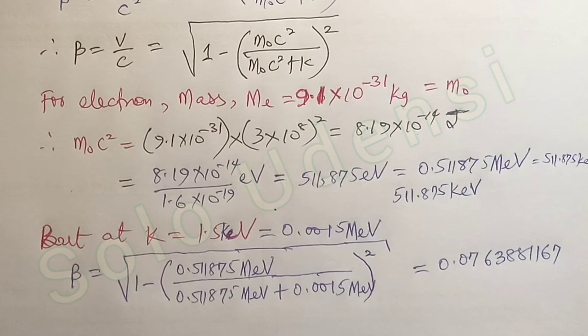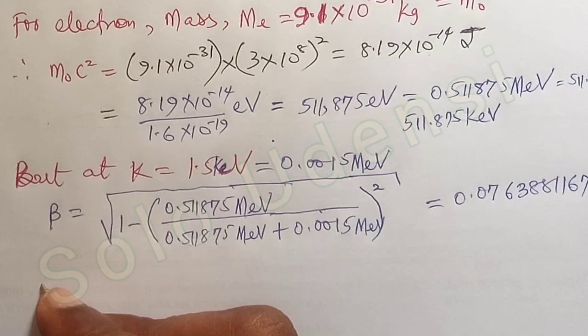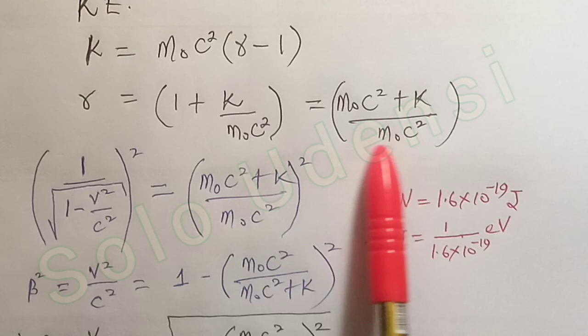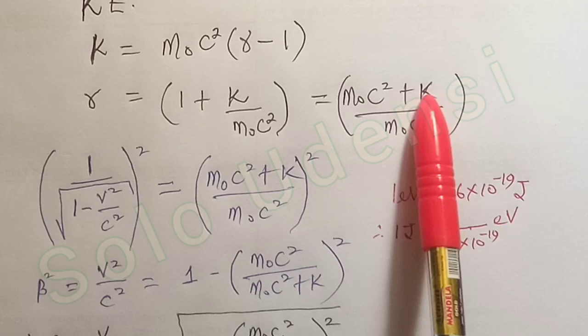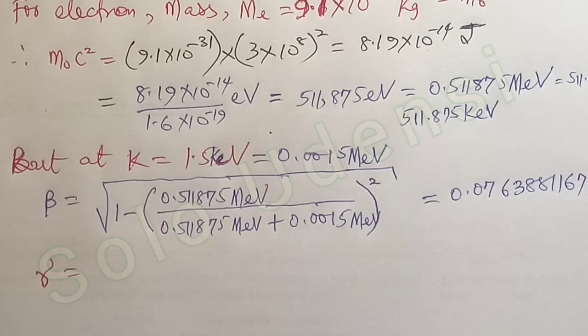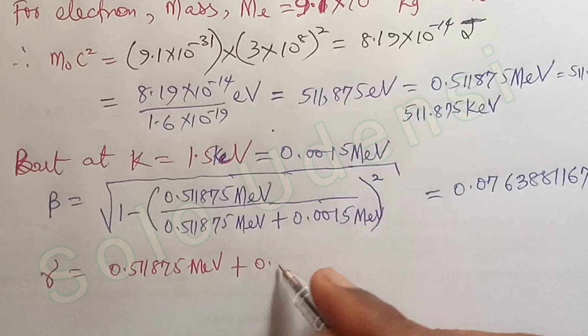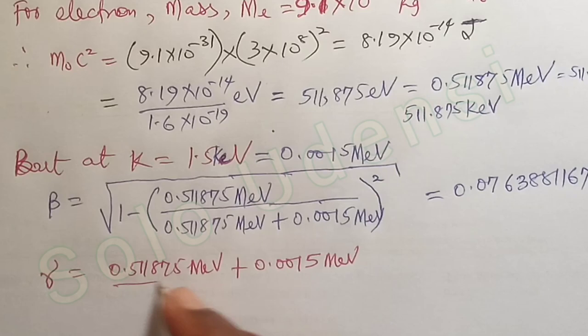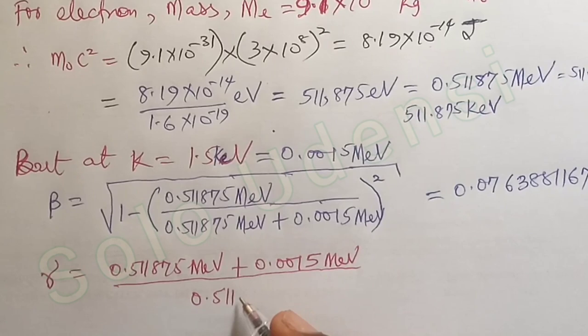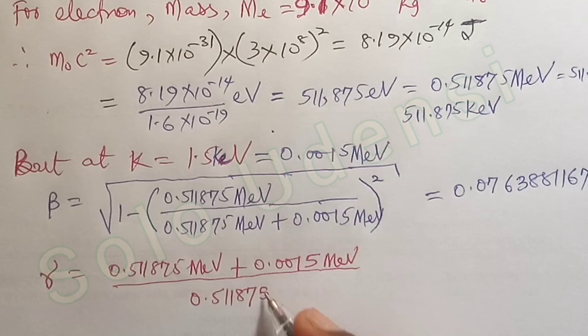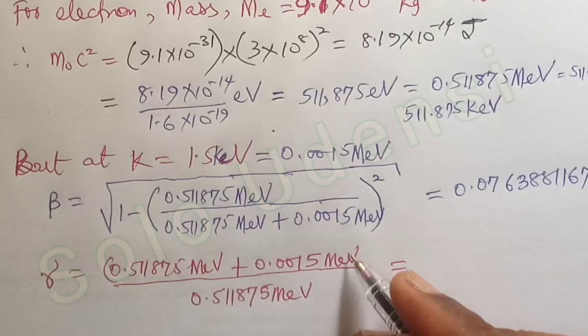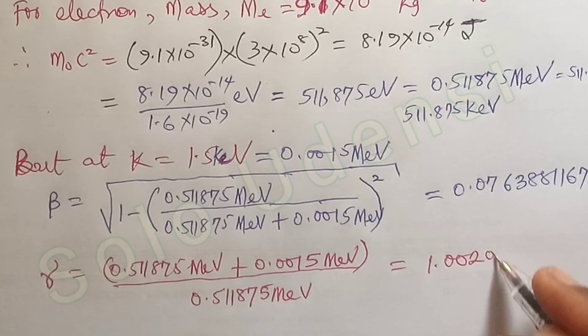For the Lorentz factor gamma, we use gamma equals (M₀c² + K) over M₀c². Putting in 0.511875 MeV plus 0.0015 MeV over 0.511875 MeV — making sure units are consistent throughout — we get gamma equal to 1.0029304029.